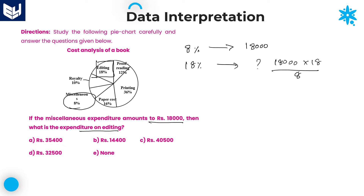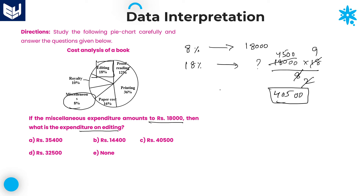By cross multiplication: 18,000 into 18 divided by 8. Cancel with 4 table: 8 divided by 4 is 2, and 18,000 divided by 4 gives 4,500. Then 4,500 into 9 equals 40,500. The expenditure on editing is 40,500. Option C is the right answer.